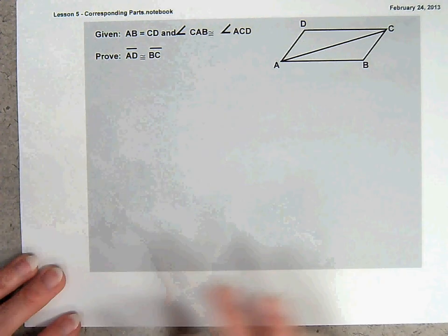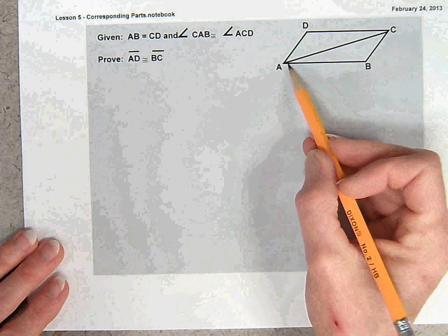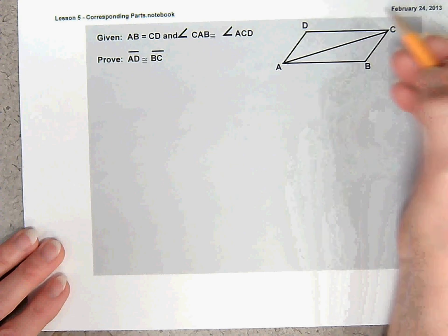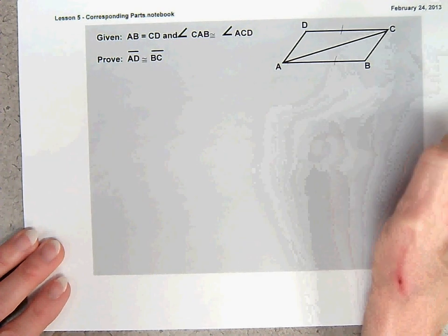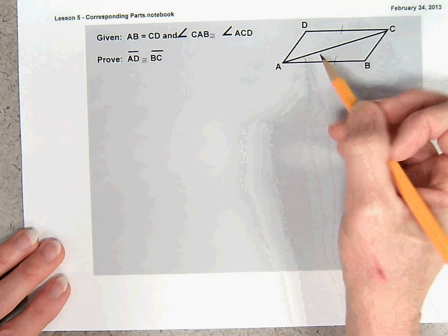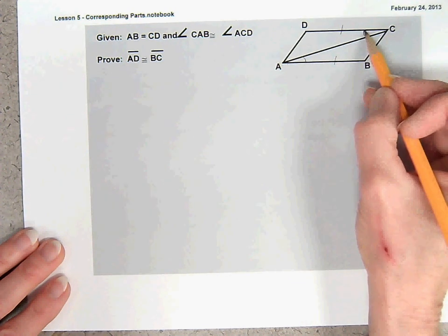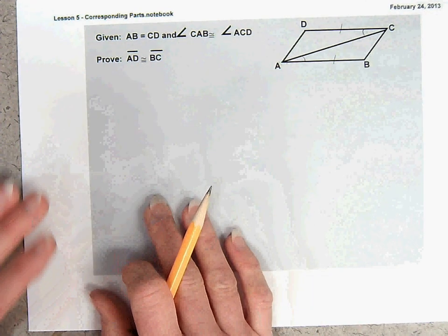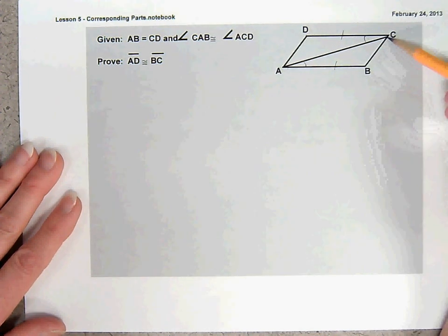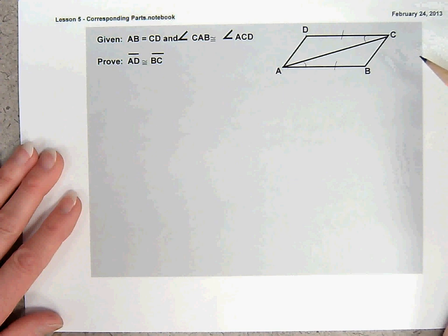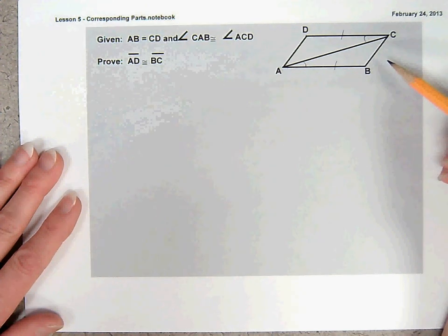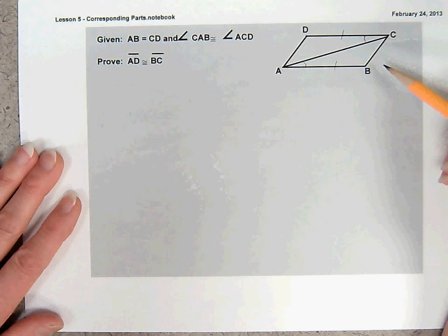Let's look at this example. If we are given that the measure of AB equals the measure of CD, let's mark our figure with the information we know — those segments are congruent. And angle CAB is congruent to angle ACD, so these two angles are congruent. Now, we want to prove that segment AD is congruent to segment BC. If we can prove that these two triangles are congruent, then we could use the CPCTC theorem to state that those segments are congruent.